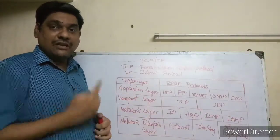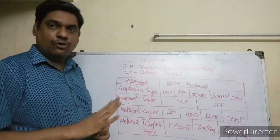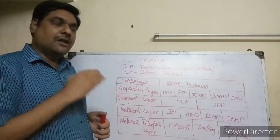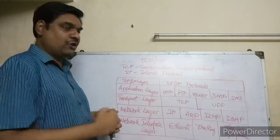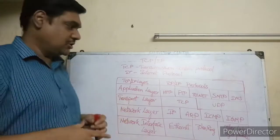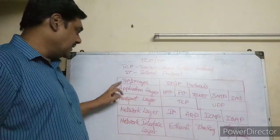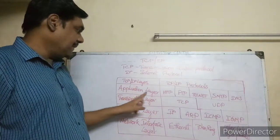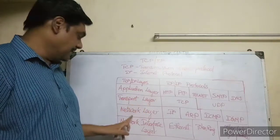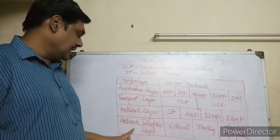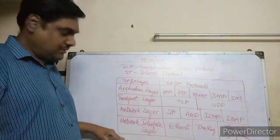Comparing with OSI layers, TCP/IP has four layers: the Application layer, Transport layer, Network layer, and Network Interface layer.